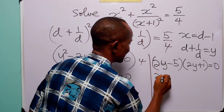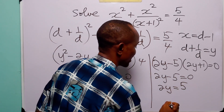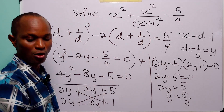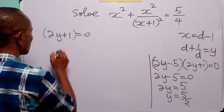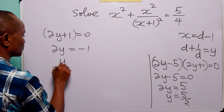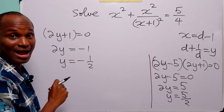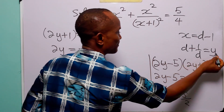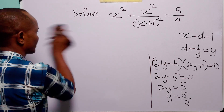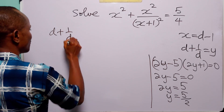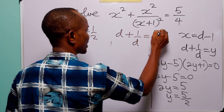From here, either 2y minus 5 equals 0, giving 2y equals 5 and y equals 5 over 2; or 2y plus 1 equals 0, giving 2y equals minus 1 and y equals minus 1 over 2. So we have two values for y: y equals minus half or 5 over 2. Recalling that y equals d plus 1 over d, we have either d plus 1 over d equals minus half or d plus 1 over d equals 5 over 2.